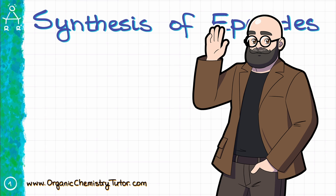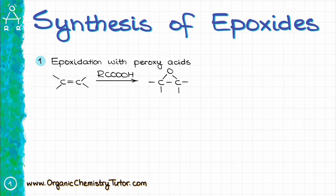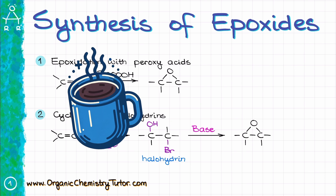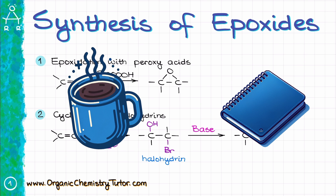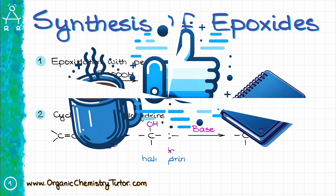Hey everyone, Victor is here, your guide to all things organic chemistry, and in this video I want to talk about the two main methods how we're going to make epoxides. First, it is the epoxidation of alkenes with peroxy acids, and second is going to be the intramolecular cyclization of halohydrins. So grab your cup of coffee and notebook to work through the examples with me, hit that like button for good luck on the test, and let's get started.